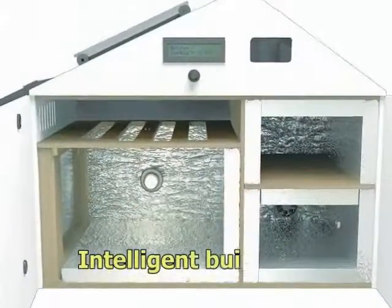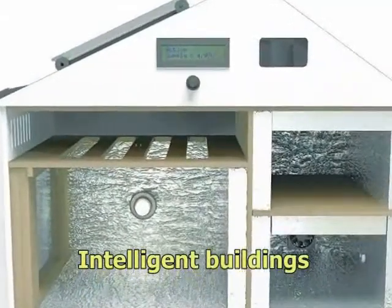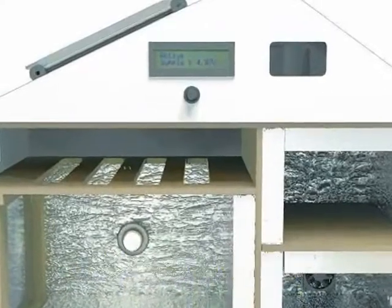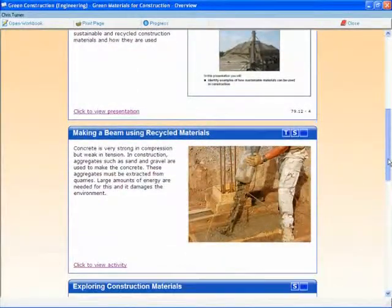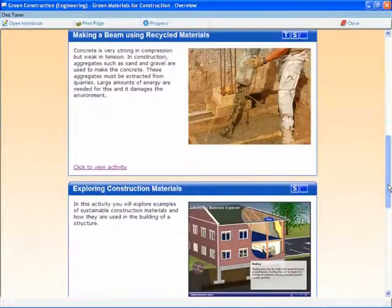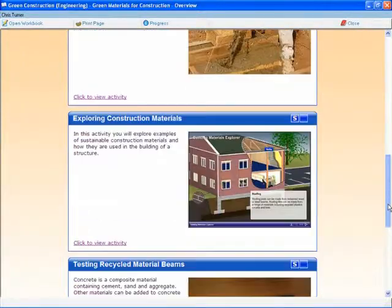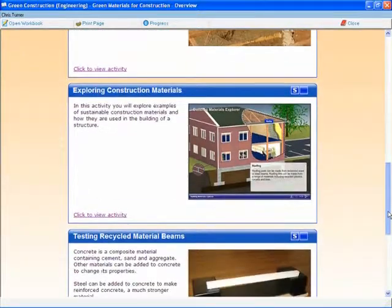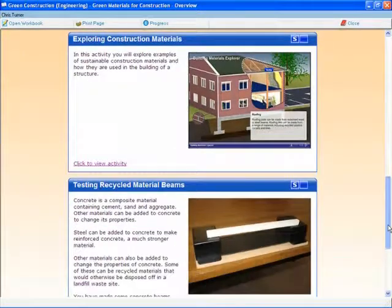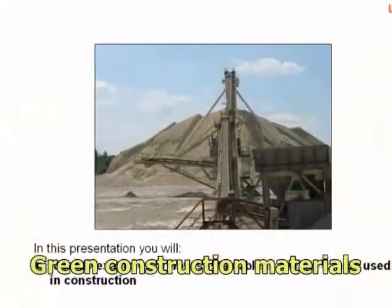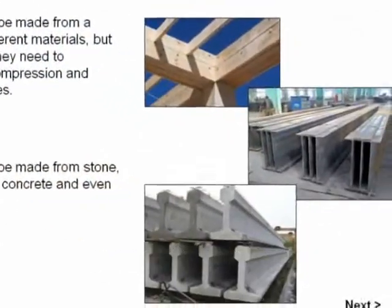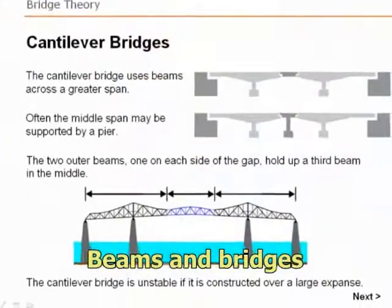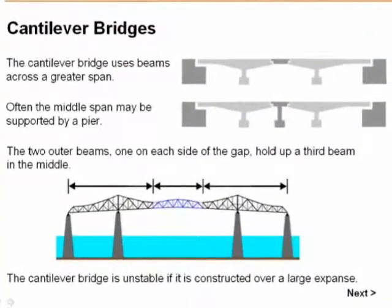The eco building is intelligent and has its own electronic control and monitoring systems. In addition to the activities based on the eco building, the module also covers green construction materials, forces on structures, and beam and bridge designs.